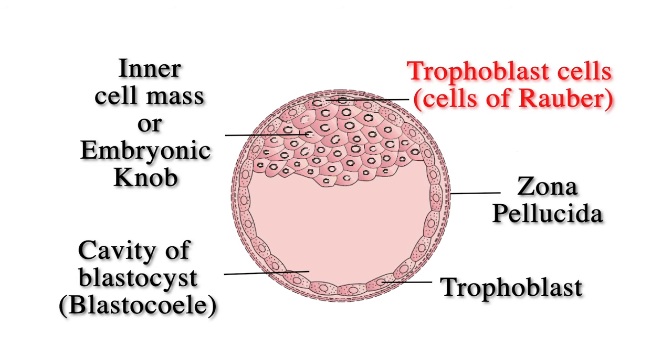The trophoblast does not take part in the formation of the embryo proper. It remains external to the embryo and gives rise to the extraembryonic membranes and also the embryonic part of the placenta. These structures are used for the protection and nourishment of the embryo. The trophoblast cells in contact with the embryonal knob are known as the cells of Rauber.